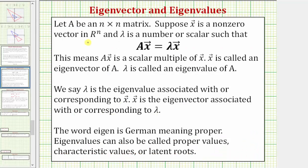For a quick review: if A is an n by n matrix, suppose vector x is a non-zero vector in R^n, and lambda is a scalar such that Ax equals lambda x. This means that Ax is a scalar multiple of the vector x, where x is called the eigenvector of A and lambda is called the eigenvalue of A.